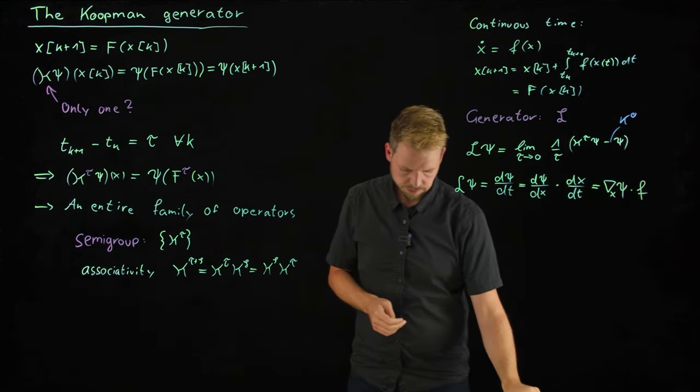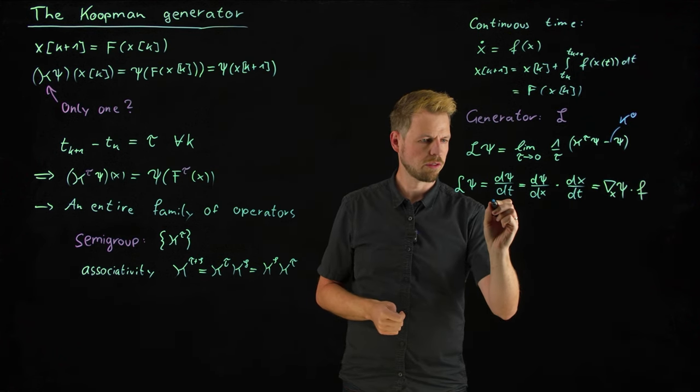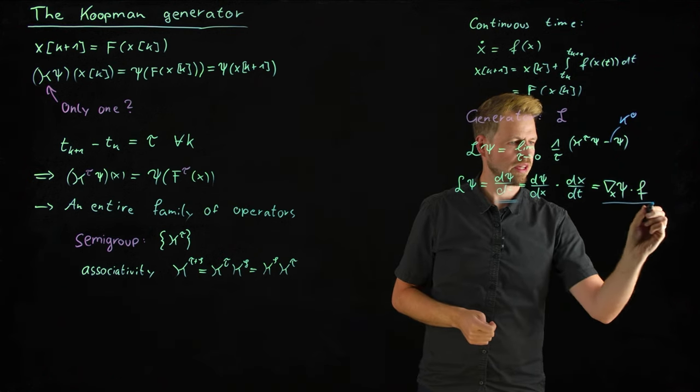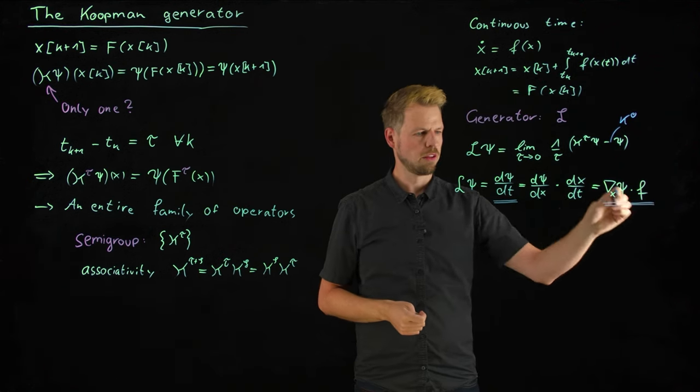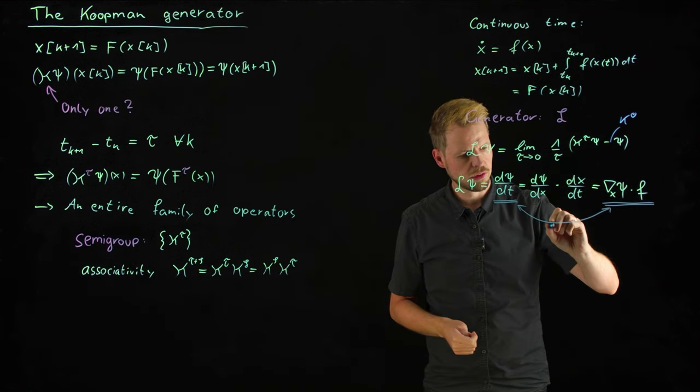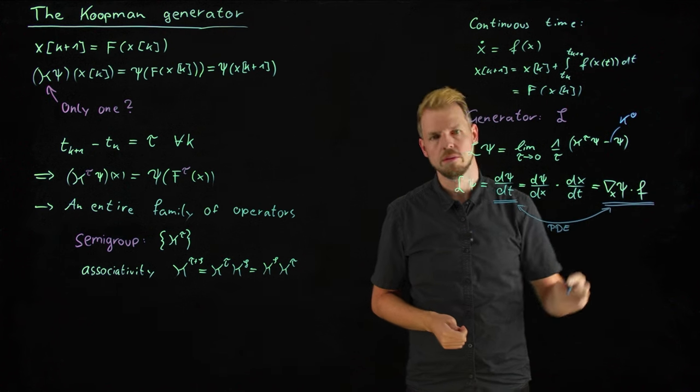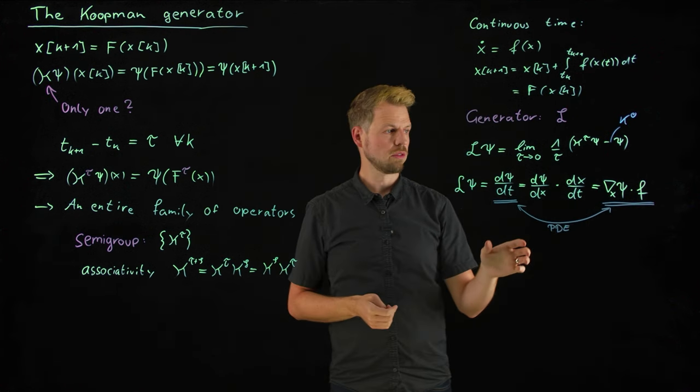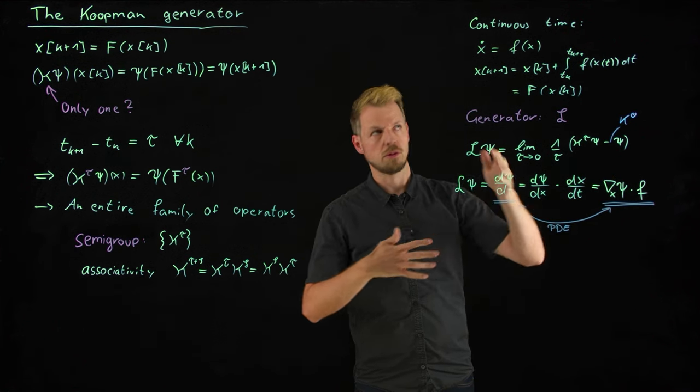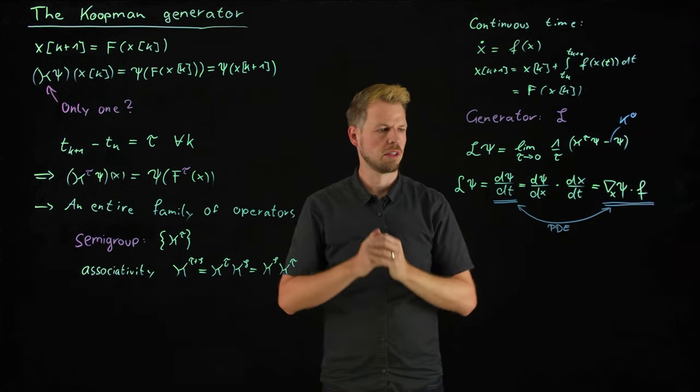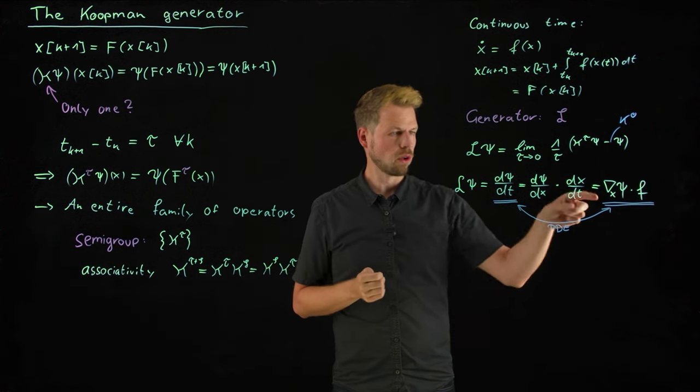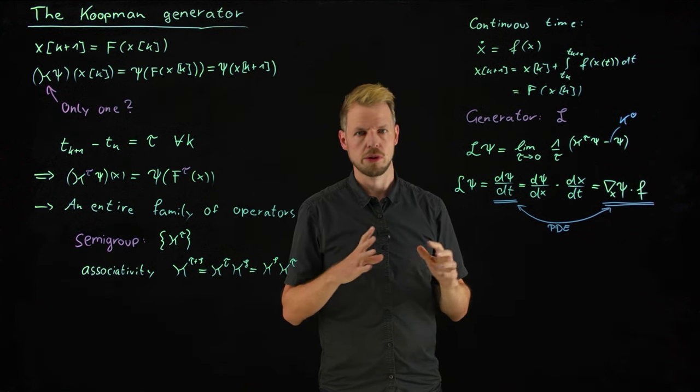And what we can see now is that dx/dt is exactly our system here, so we can replace dx/dt by x dot by f of x. So what we get is the gradient of our observable feature map times the right-hand side. And what we see here is something very interesting: we have a time derivative of our psi and we have here a spatial derivative of our psi.